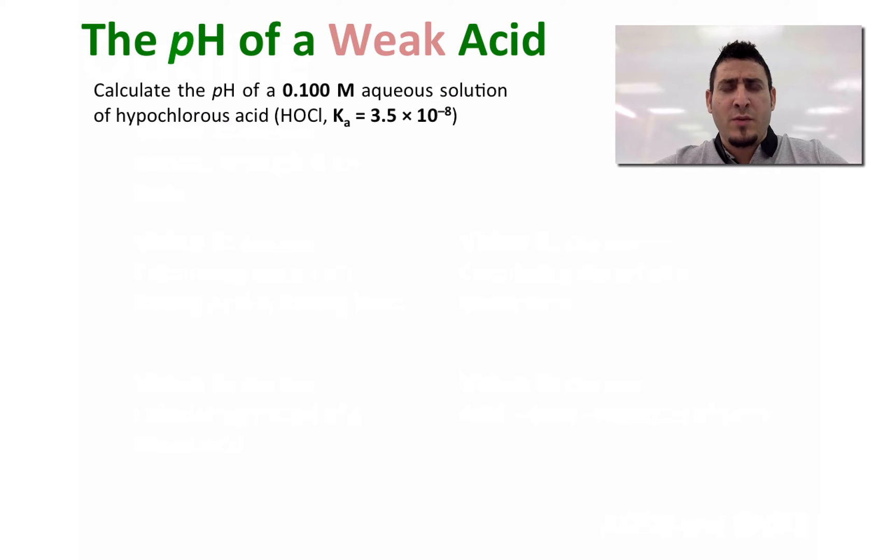Now to calculate the pH of a weak acid, we have to follow 11 steps. I will walk you through every step. Step 1: We write the major species in solution. Since weak acid will not completely dissociate, the major species is the acid itself. So the major species in solution are the weak acid, hypochlorous acid, and water.